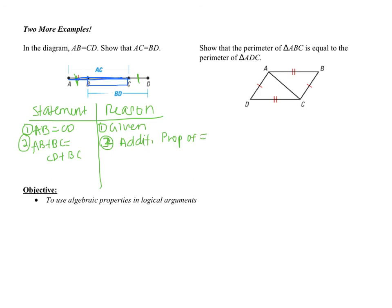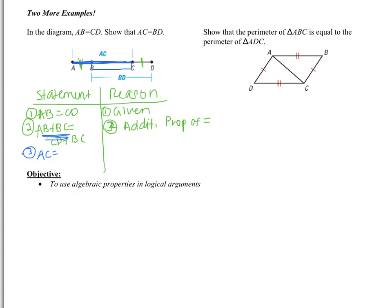AB plus BC in our figure is AC. So I get AC equals CD plus BC. And CD plus BC gives us BD. That's the segment addition postulate — you took two segments and added them together. And that's it, we're finished.